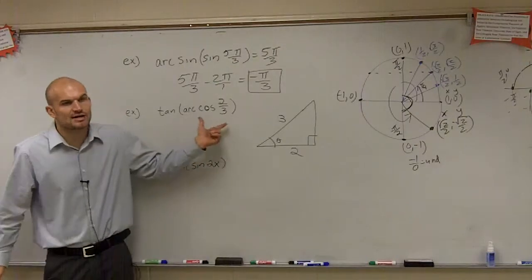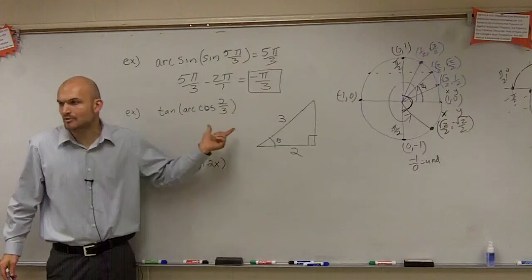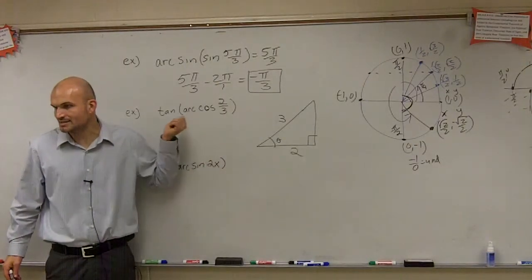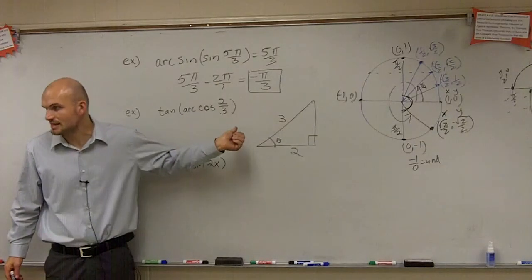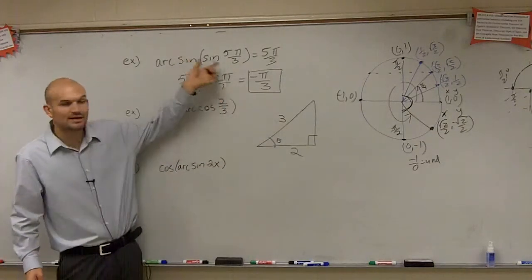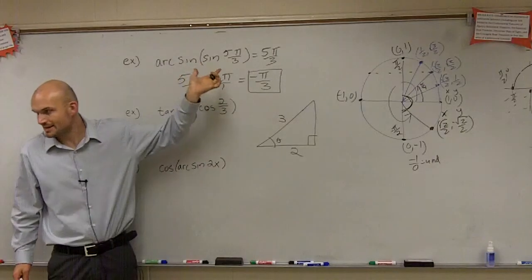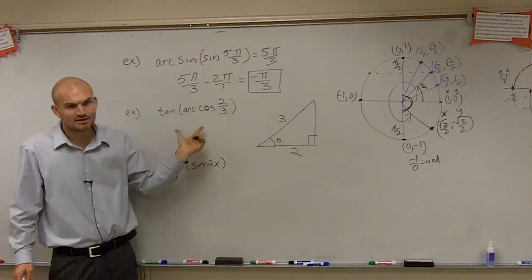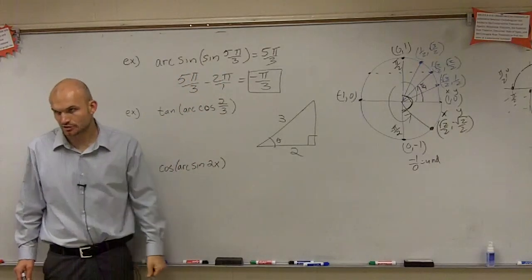Notice that these are not inverse operations of each other. This is tangent, and that's cosine. Up here, you can see how they undid each other — but these two are not going to undo each other.